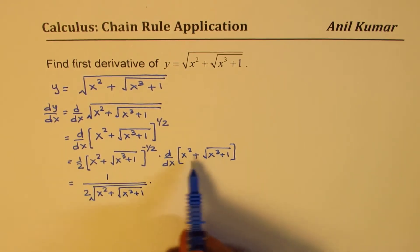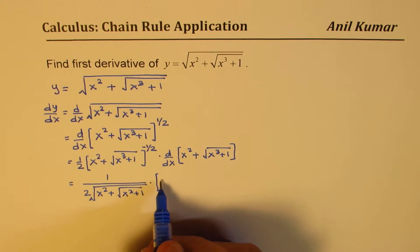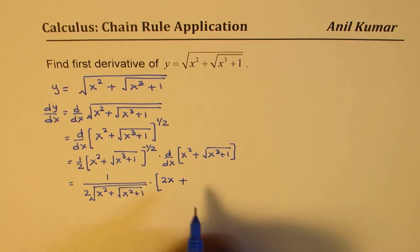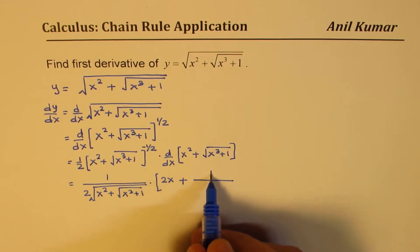Now what is the derivative of this portion? x square derivative is 2x plus derivative of this, which is again half of square root of x cube plus 1.